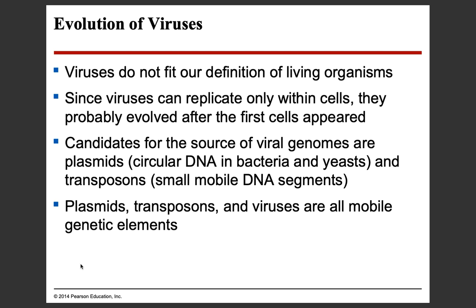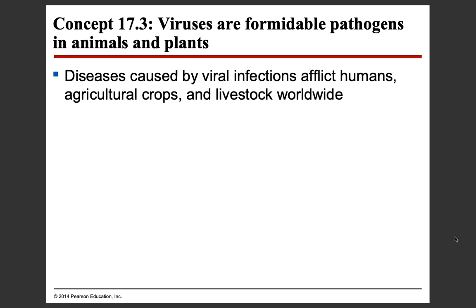Evolution of viruses: viruses do not fit our definition of living organisms — they are particles, not cells, and cells are the basic unit of life. Since viruses can replicate only within cells, they probably evolved after the first cells appeared — it wouldn't make sense for them to come first since they require a host. Candidates for the source of viral genomes are plasmids, which are circular DNA in bacteria and yeast cells, and transposons, which are small mobile DNA segments that pass back and forth between bacteria. Plasmids, transposons, and viruses are all mobile genetic elements, which is why they're able to transport nucleic acids between different organisms.